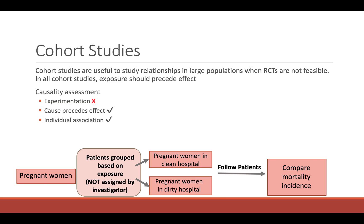If we plug in our information from our study into this flowchart, our sample is pregnant women, but now we're grouping the women based on their exposure. We've got pregnant women in the clean hospital, who are exposed to the hand-washing policy, and pregnant women in the dirty hospital, who are not exposed to hand-washing. Then we're going to compare mortality.